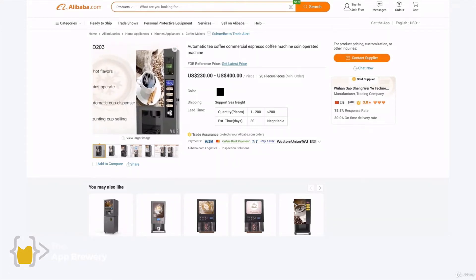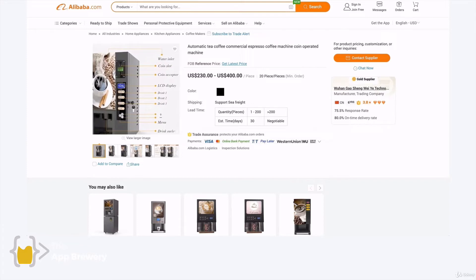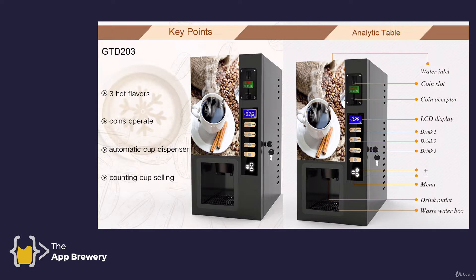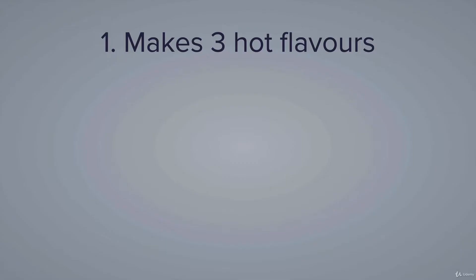We're going to use this real life coffee machine as the inspiration for our virtual coffee machine, noting the features and the capabilities. It has three hot flavors — which are likely these three buttons — it's coin operated, and there's not much else it can do. Let's take this example and make a digital version of it.